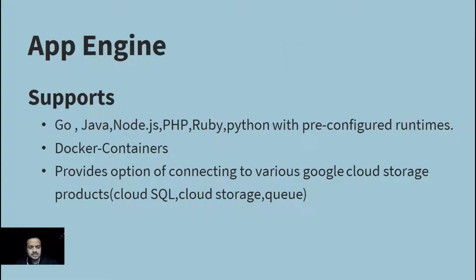So what makes App Engine so special? It supports various languages such as Go, Java, Node.js, PHP, Ruby, Python, and even .NET. Another major feature is that it supports Docker containers, so as long as your application is running in a Docker container, it will seamlessly run on App Engine.